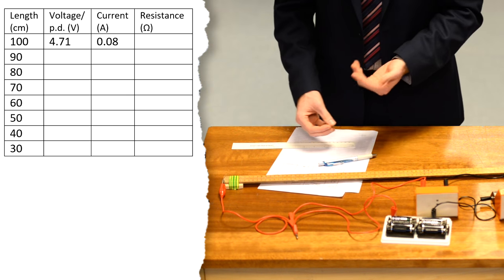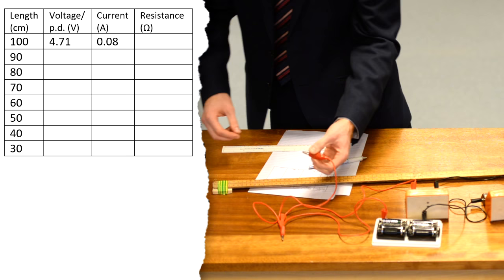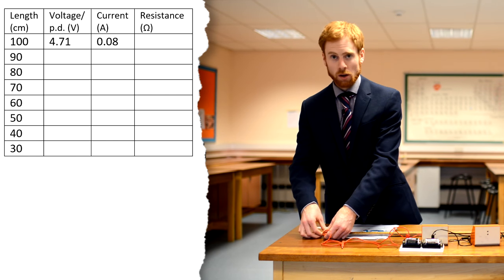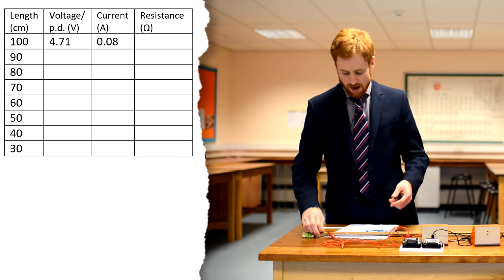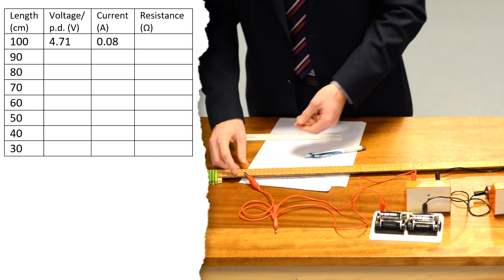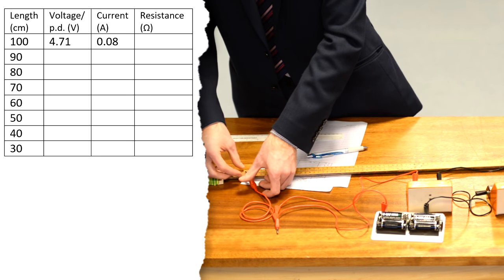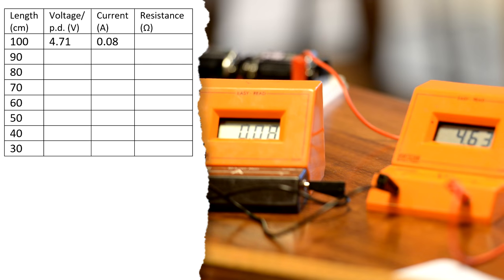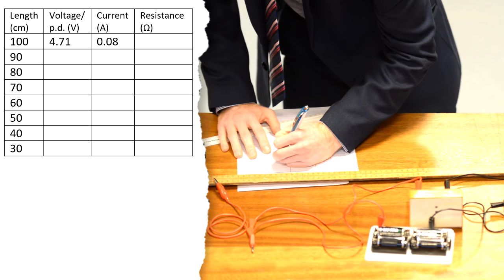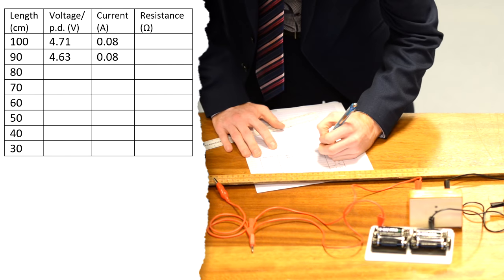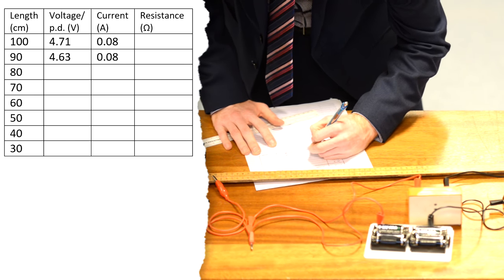Then all I need to do to test the next length is unclip the red wire here, leave the other one in place, and just clip it on at the 90 centimeter mark on the ruler. Do make sure that the piece of wire is taut on the meter ruler otherwise you're going to end up with more than 90 centimeters of wire and that would introduce an error. At 90 centimeters now I have an ammeter reading still of 0.08 amps but the voltage has dropped to 4.63 volts as the resistance of a shorter piece of wire is lower.